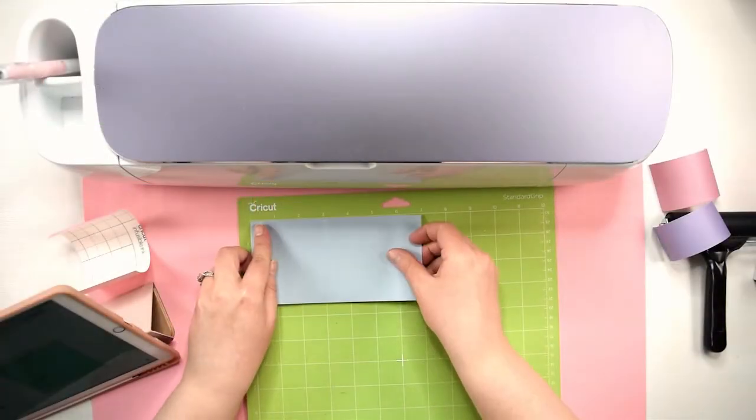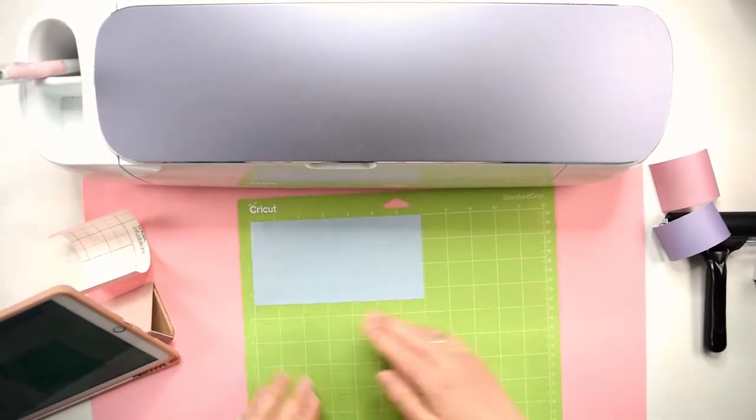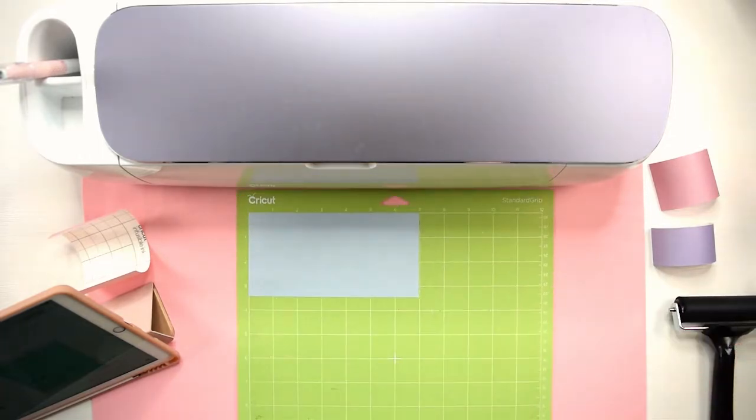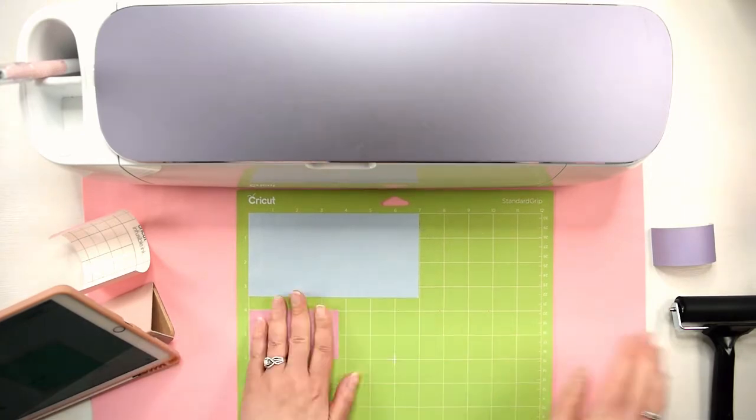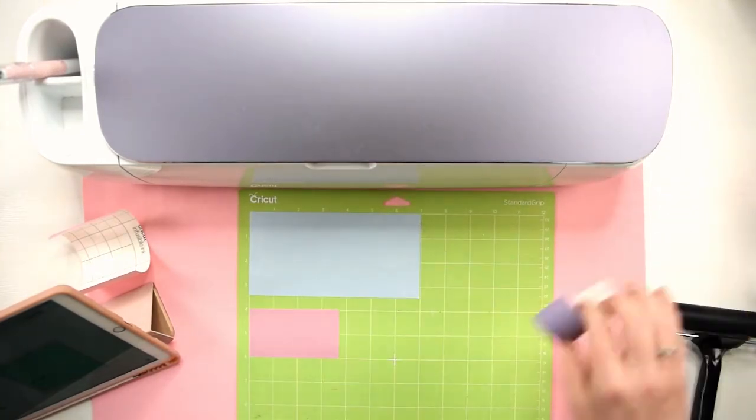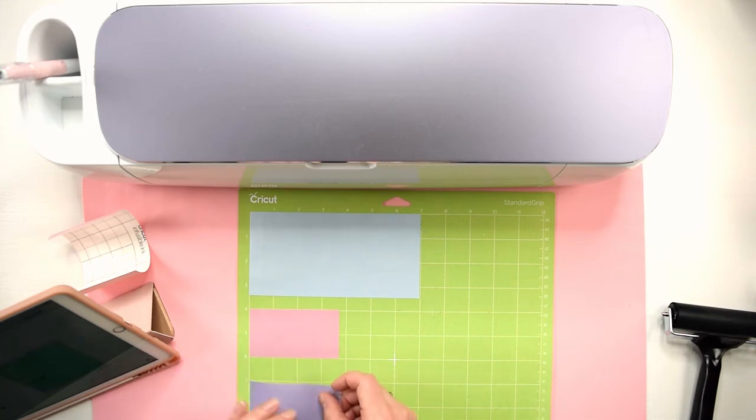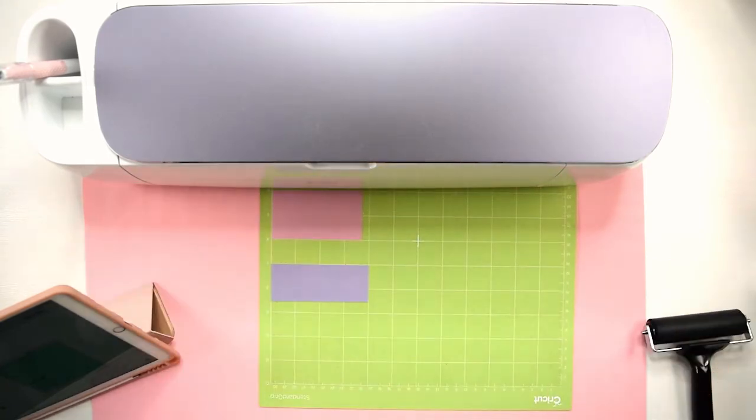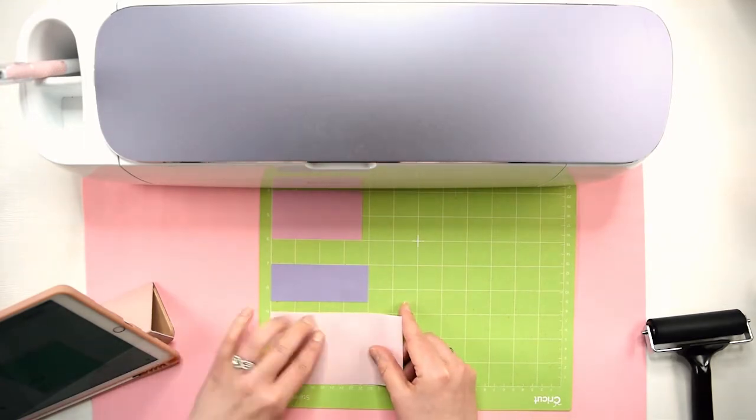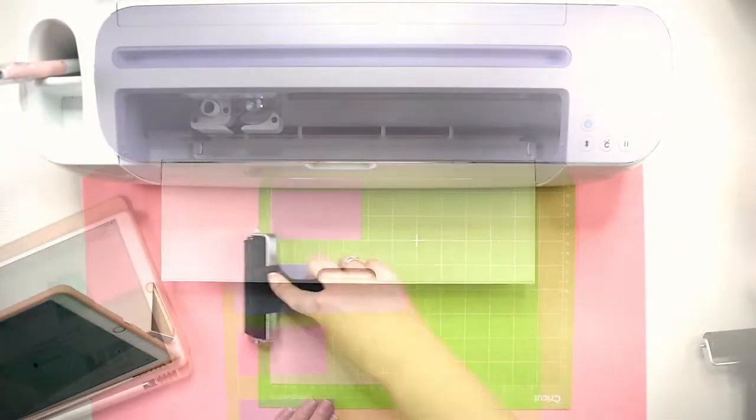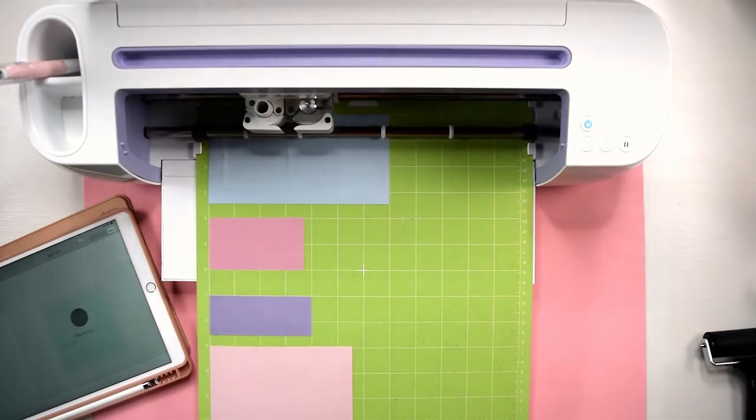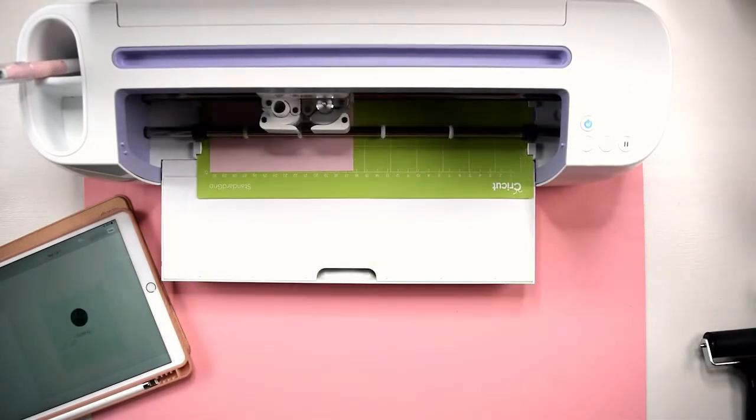Now we are ready to place the infusible ink on our standard grip cutting mat. Make sure you place the infusible ink with the ink side up and double check where you need to place the infusible ink in Design Space so that it covers all of the areas that will be cut. Also you might notice that the colors look extremely muted. That is normal with infusible ink and when the colors transfer to the mug they will look vibrant so don't worry. Once the ink is placed on the mat I like to use a brayer tool to make sure the material is really stuck down well. Then load your mat and select the C button to start cutting.